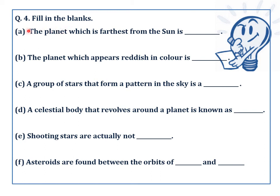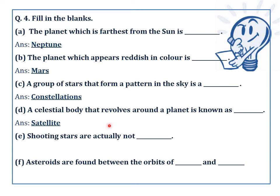Question number 4. Fill in the blanks. A. The planet which is farthest from the sun is Neptune. B. The planet which appears reddish in colour is Mars. C. A group of stars that form a pattern in the sky is called a constellation — a group of stars that has a recognisable shape or pattern. D. A celestial body that revolves around a planet is known as a satellite. E. Shooting stars are actually meteors — small pieces of dust or debris that occasionally enter the earth's atmosphere; they are not stars. F. Asteroids are found between the orbits of Mars and Jupiter, where a large number of rocky objects revolve around the sun.